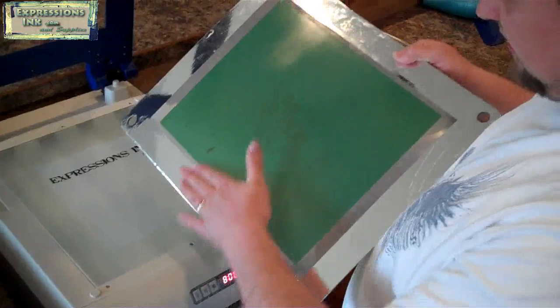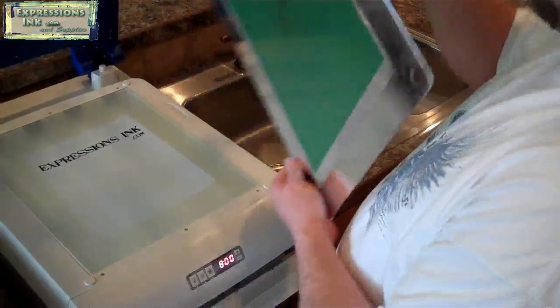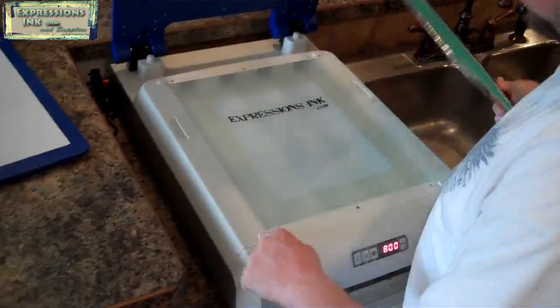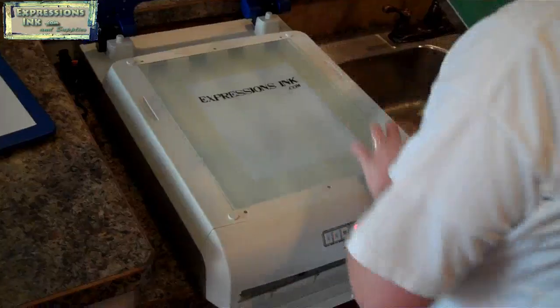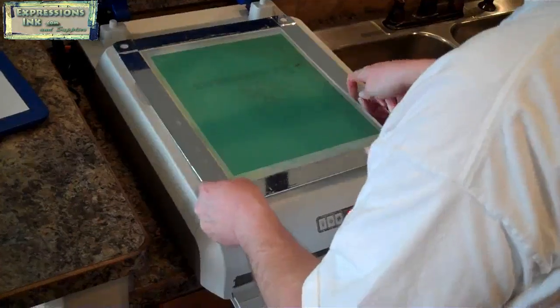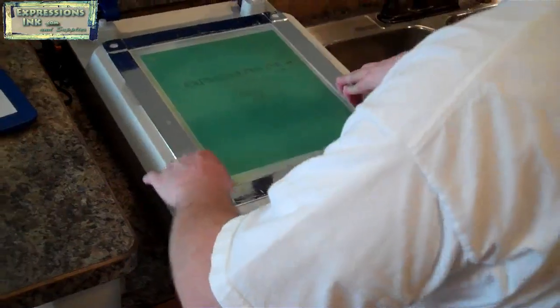This is the bottom side, the flush side of our screen. We'll flip that over and use these alignment pins on the machine to line up or set our screen on. That holds the alignment.